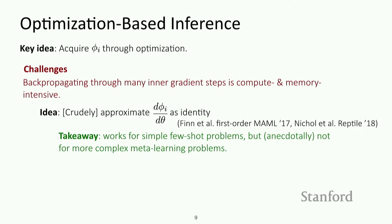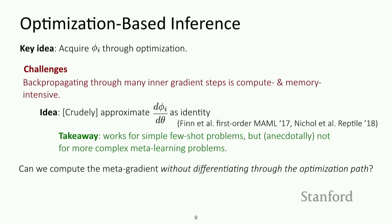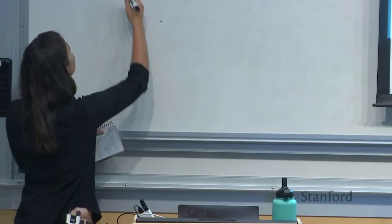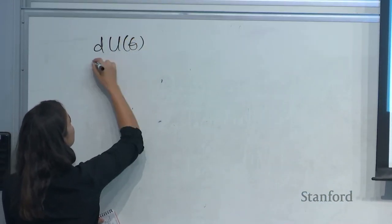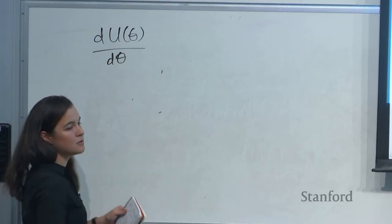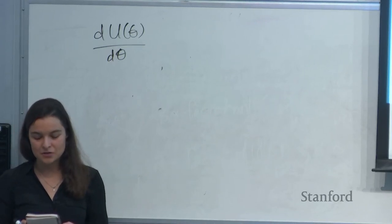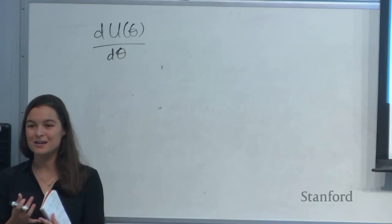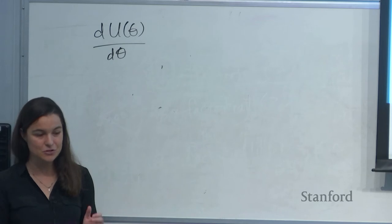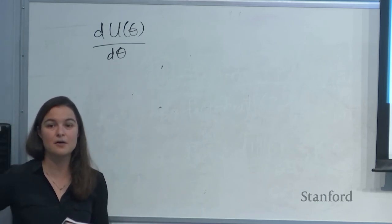A better approach: can we compute the meta-gradient without differentiating through the optimization process, and without approximating it as identity? We still need to do one full forward pass through the update rule, but there are things we can do to mitigate the meta-gradient computation. Let's write down the update rule using an explicit Gaussian prior on the parameters — phi equals the argmin of the loss on training data plus a Gaussian regularization that keeps our task parameters close to theta.